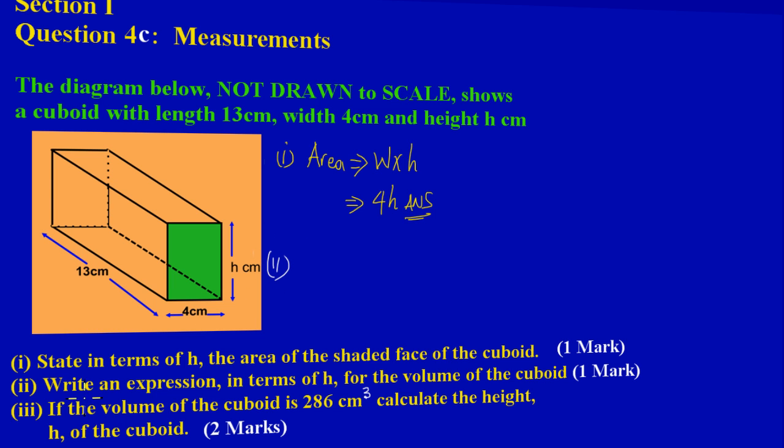Now in part two they're asking us to write an expression in terms of h again for the volume of the cuboid. All right, and that's another easy one mark. So let's just go back to basics on what we learned about volume. Volume of an object, and volume now has to do with a three-dimensional shape. So volume basically you're multiplying three measurements. So volume is equal to the length times the width times the height of the object.